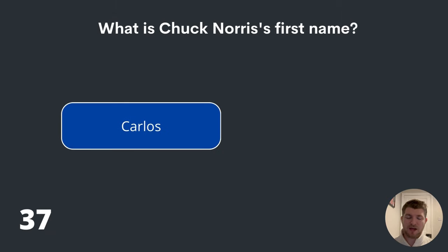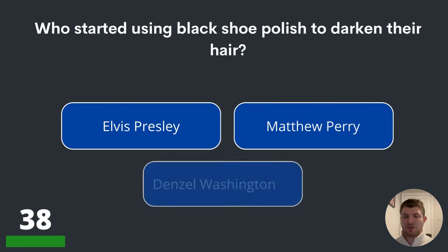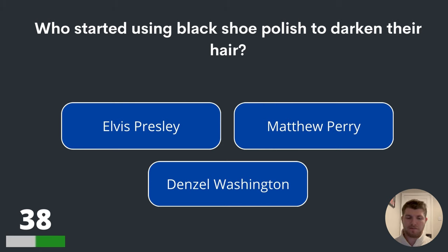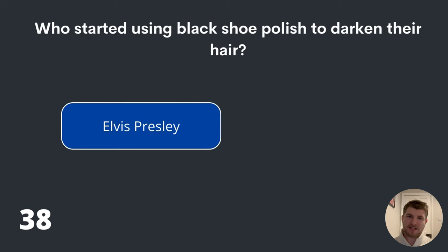Well done if you got that one right. Question thirty-eight. Who started using black shoe polish to darken their hair? Elvis Presley, Matthew Perry or Denzel Washington? The answer is Elvis Presley.